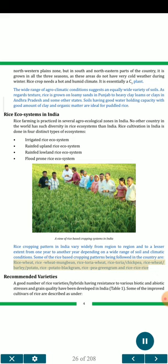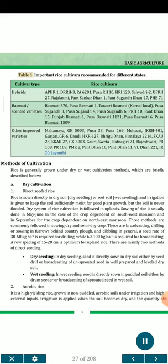Recommended varieties: A good number of rice varieties and hybrids having resistance to various biotic and abiotic stresses and grain quality have been developed in India. Some of the improved hybrid cultivars of rice are: AFT 1, DRRH 3, PA 6201, PUSA RH 10, HRI 120, Sahyadri 2, UPRH 27, Rajalakshmi, Sankar Dhan 1, Sugandh Dhan 17, PHB 71.